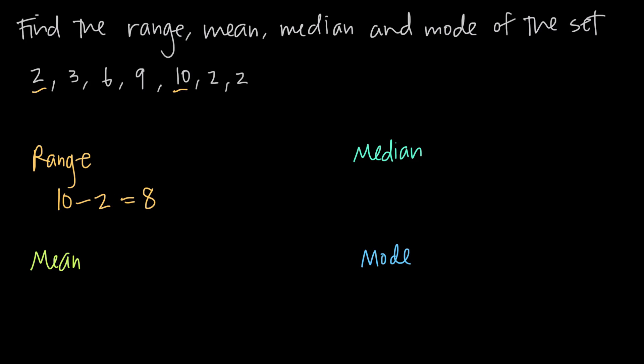We're going to get 10 minus 2, which is going to be 8. You can think about this as the set ranges from 2 to 10, or between 2 and 10, so a distance of 8 units. The range is 8. If we talk about mean, mean is like average. The way we find the mean is we add up all of the numbers in our set, and then we divide by the number of numbers that we have.